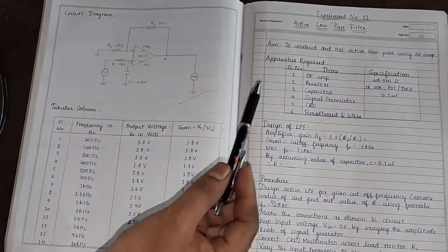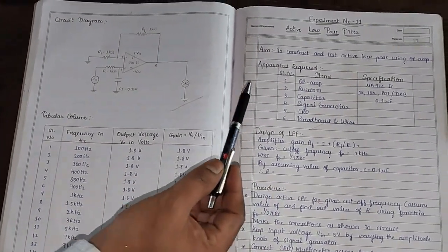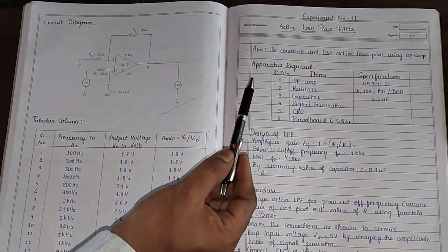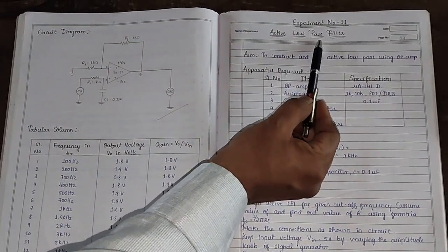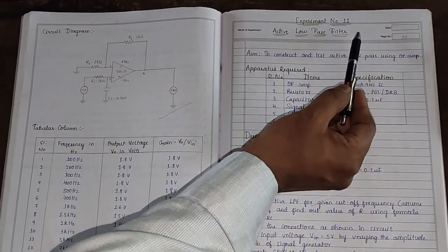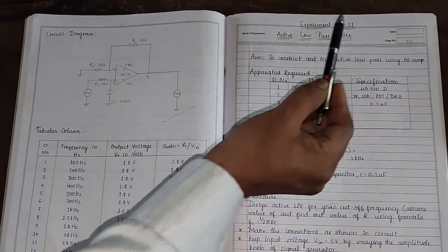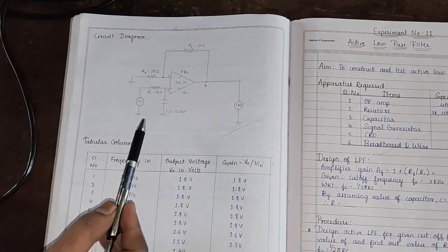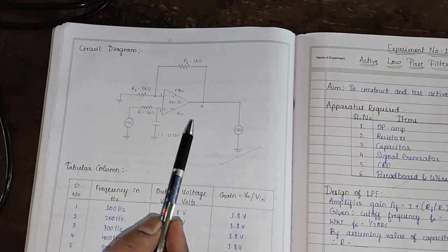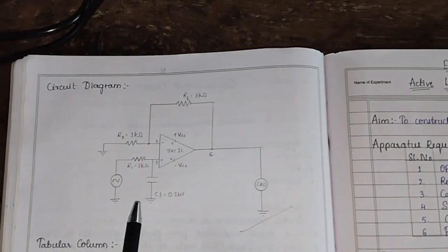In this video we will show you how to perform an active low pass filter using an op-amp. This is the circuit of the active low pass filter.